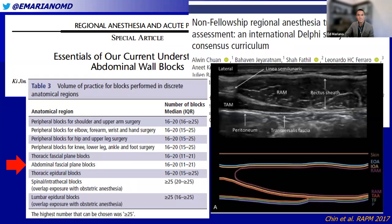When looking at incorporating fascial plane blocks into clinical practice, it's important to consider how this pertains to general anesthesia practice. A recent Delphi study involving international experts examined what a non-fellowship regional anesthesia training curriculum would look like. Under table three, abdominal fascial plane blocks and thoracic fascial plane blocks are included in the recommended procedures that non-fellowship regional anesthesia practitioners or general anesthesiologists should learn. Any anesthesiologist in training should learn at least one or two applications of these fascial plane blocks before going into practice.